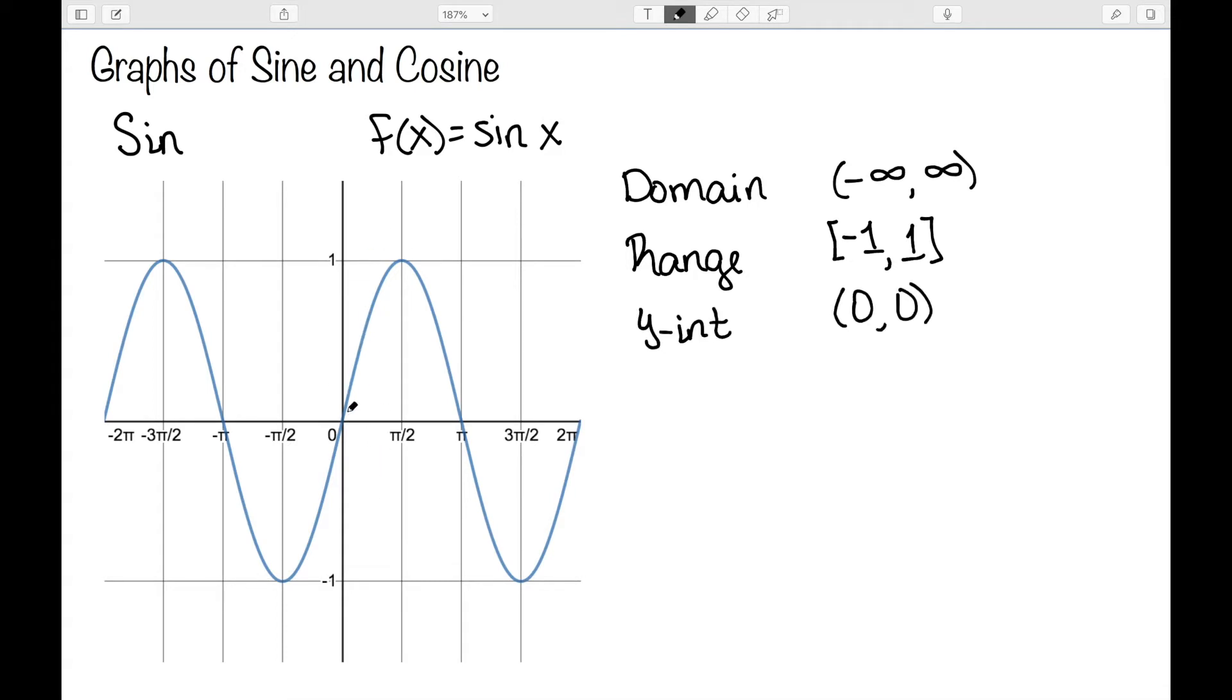My y-intercept is (0,0), crossing the y-axis at 0, because sine of 0 is 0. I have multiple x-intercepts. They're all of the form k times pi comma 0, where k is any integer. So we have pi, 2 pi, 3 pi, 4 pi, etc.